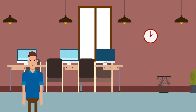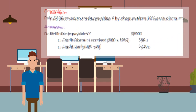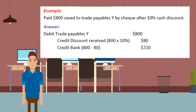Another example involves a discount received from trade payables. Example: Paid $800 owed to trade payables Y by cheque after 10% cash discount. The answer: debit trade payables Y $800, credit discount received $80 ($800 × 10%), credit bank $720 ($800 minus $80).